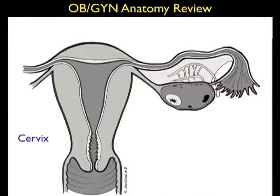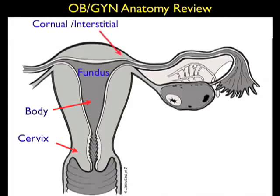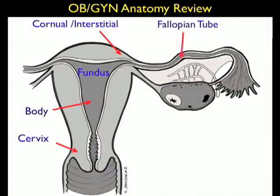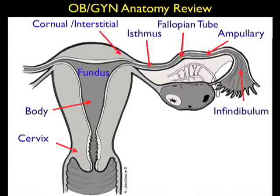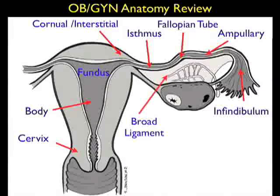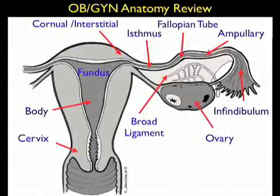Before launching into the sonographic findings of a normal intrauterine pregnancy, let's quickly review the OBGYN anatomy important for this application. We see the uterus to the left and adnexa to the right. Notice the areas of the uterus: the lower cervix, the intermediate body, and the fundal region towards the top — where we define an intrauterine pregnancy to be located. We see the area where the fallopian tube enters the uterus, which is the interstitial region in a normal uterus and the cornual region in a bicornuate uterus — where some variants of ectopics can implant. The broad ligament encases the fallopian tube and the ovary.